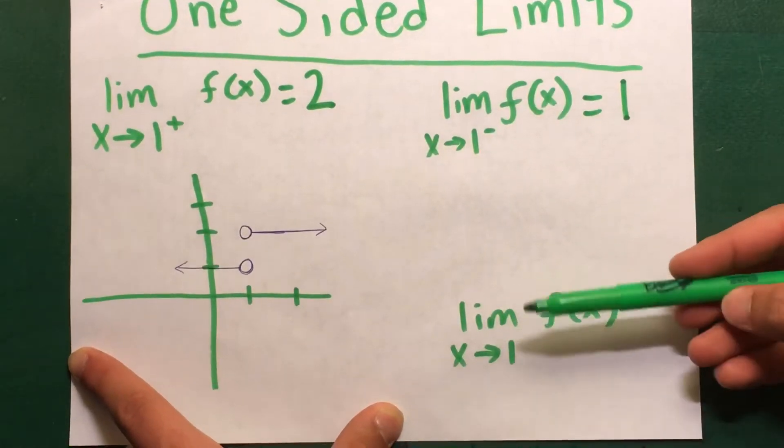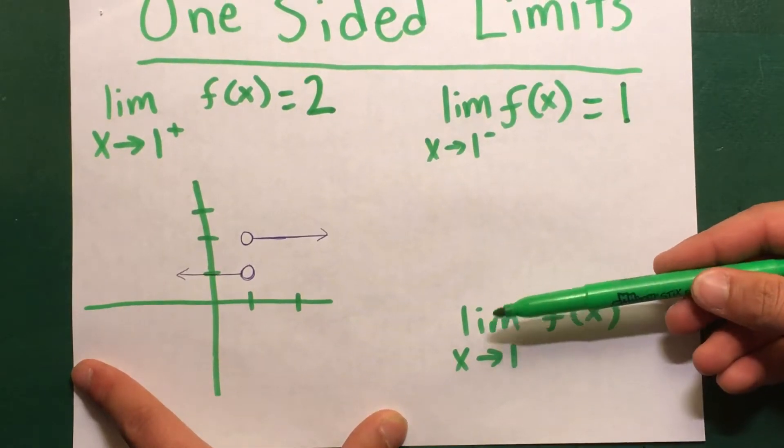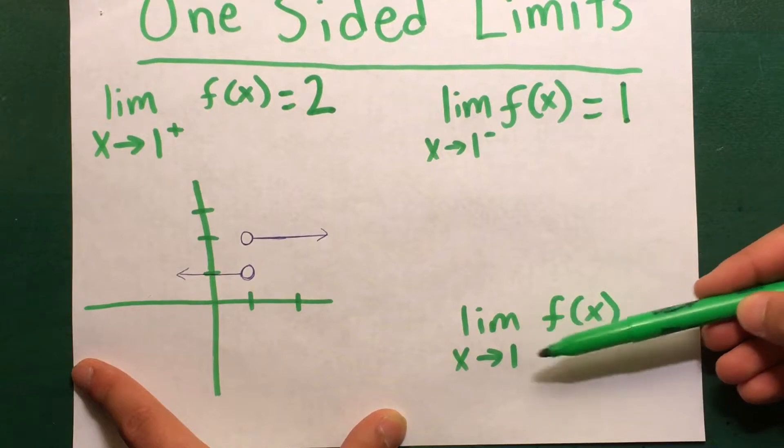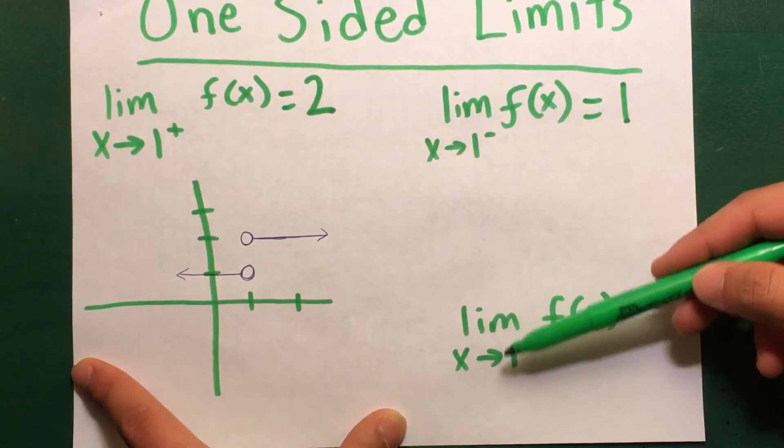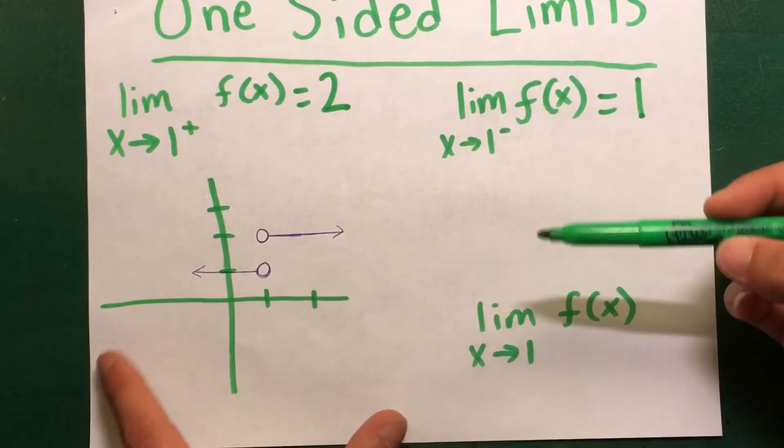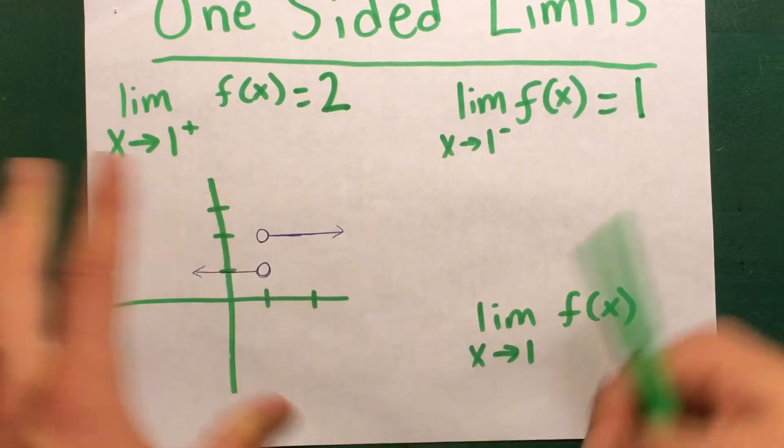Finally, if you're asked what's the limit as x approaches 1, having no specified direction, just the limit as x approaches 1 of f, the limit does not exist. And it's one of the properties of continuity.